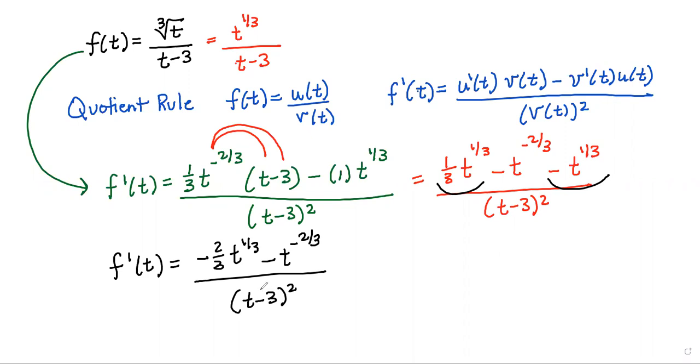So again, we have already solved it, but the rest will just be fun tricks to clean it up a bit. So one way to clean up a messy situation with powers, especially negative powers, is to multiply everything top and bottom by basically the positive version of that negative one. So we're going to multiply everything by t to the 2/3rds.